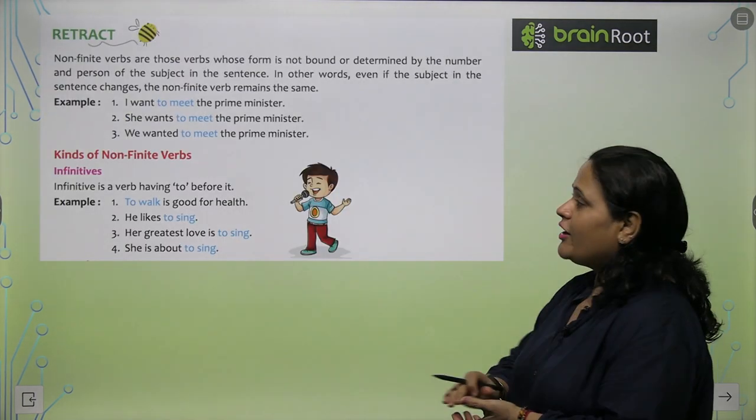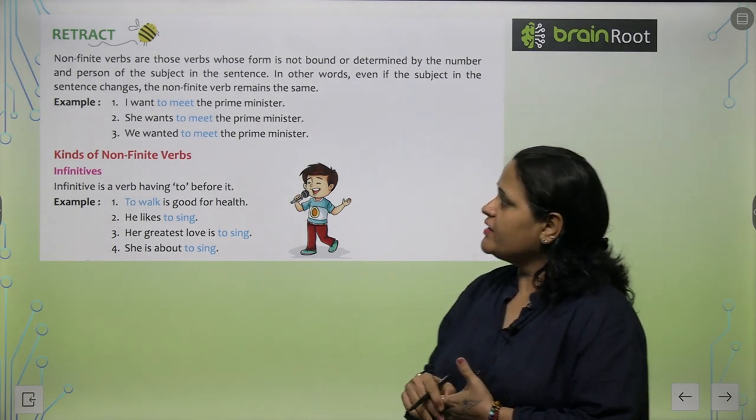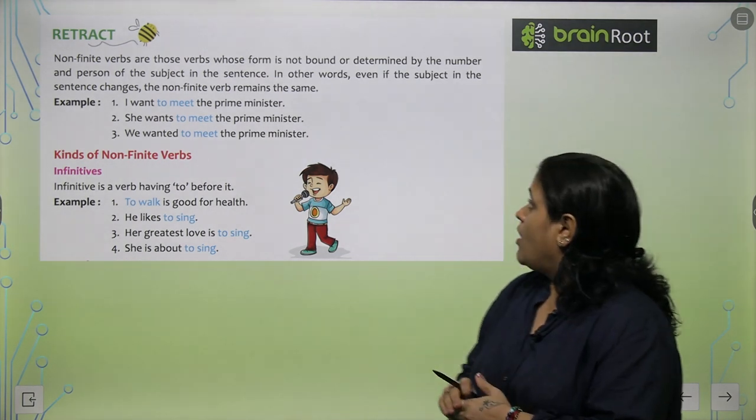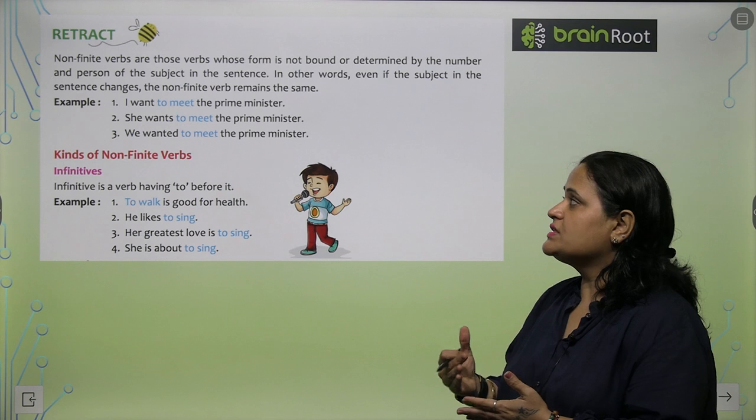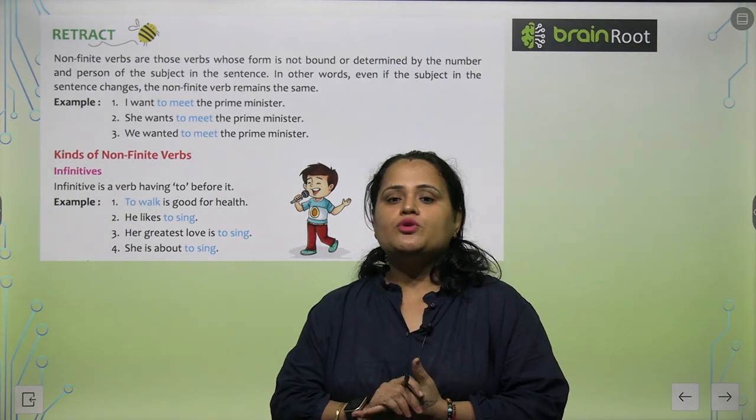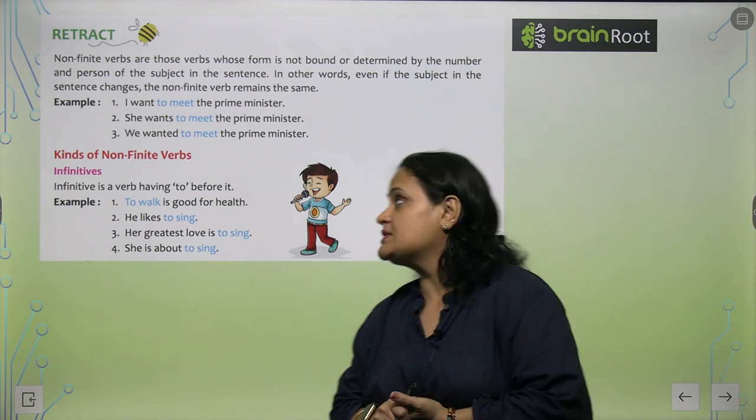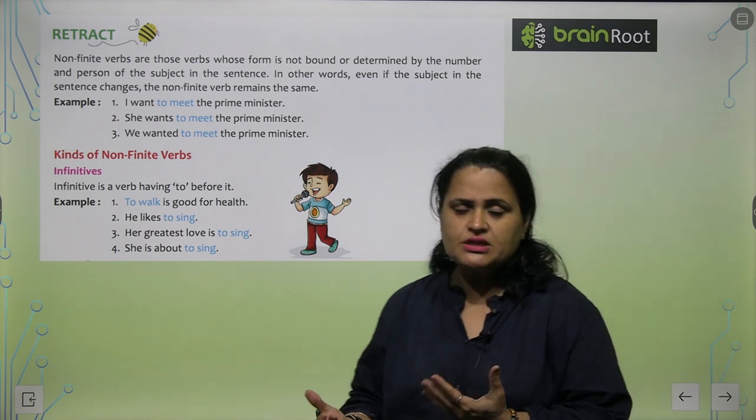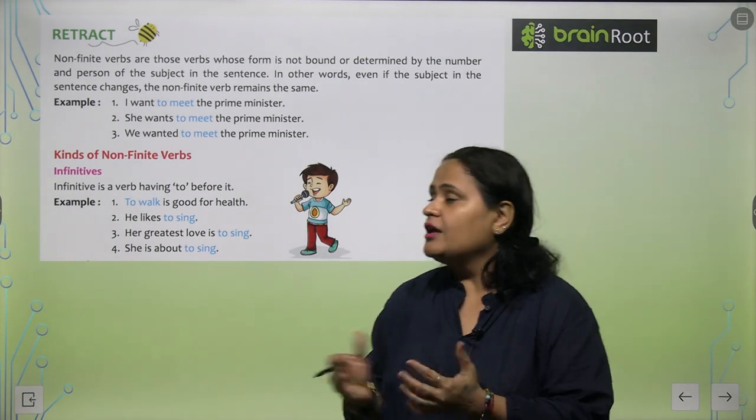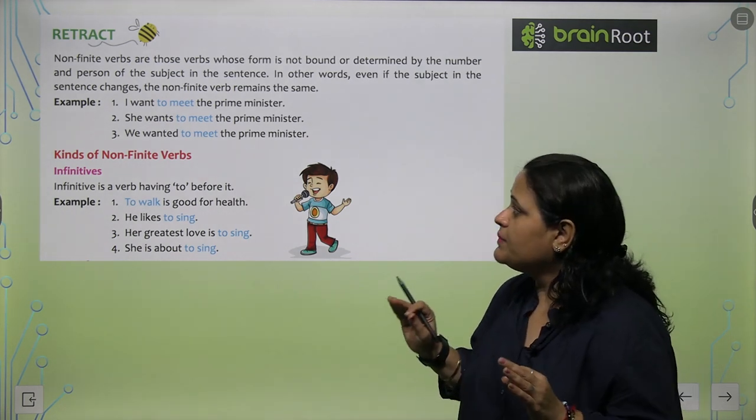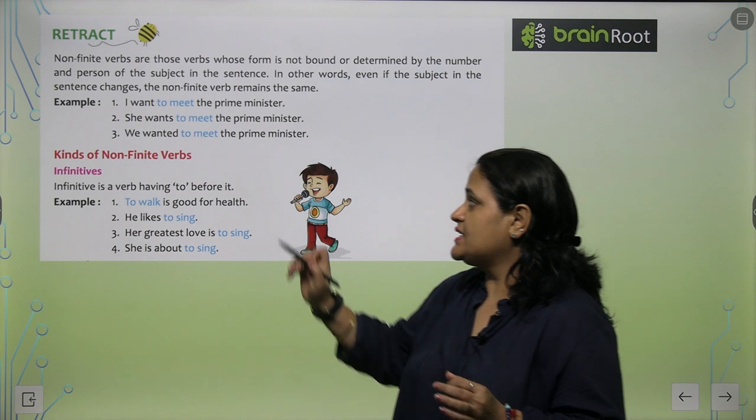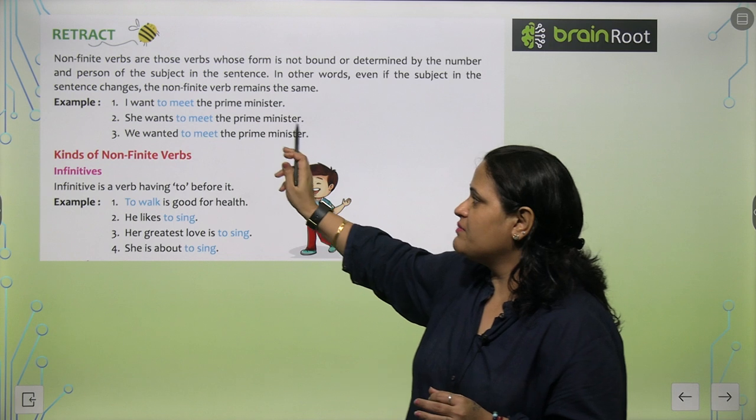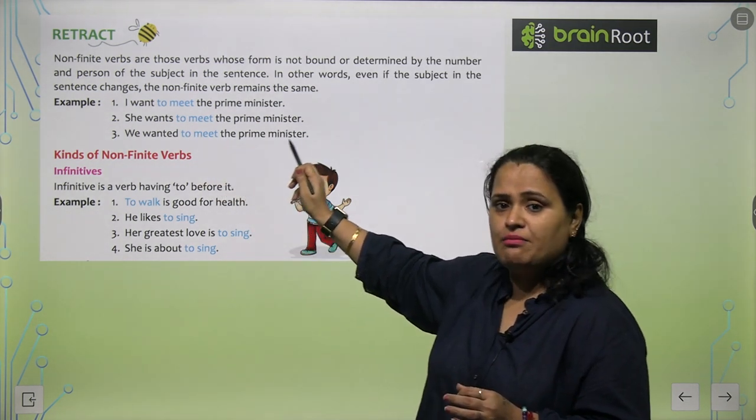So now what are non-finite verbs? Non-finite verbs are those verbs whose form is not bound or determined by the number and person of the subject in the sentence. In other words, even if the subject changes in the sentence, it will remain the same. For example: I want to meet the prime minister. She wants to meet the prime minister. He wanted to meet the prime minister.